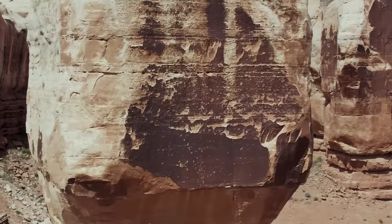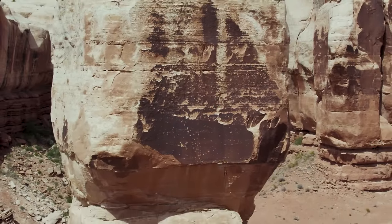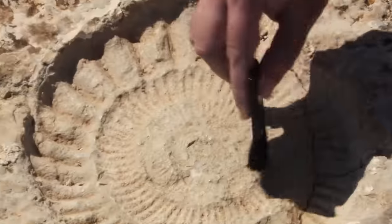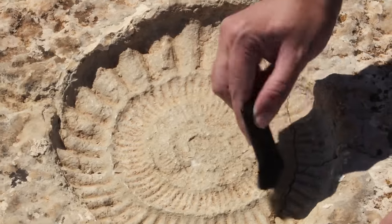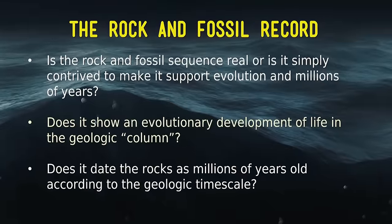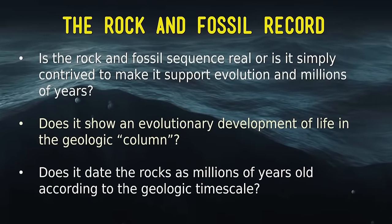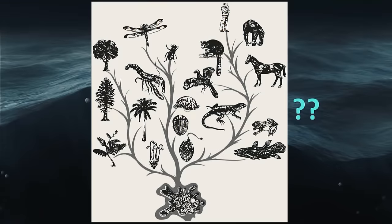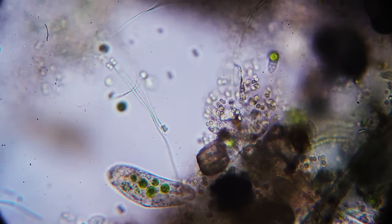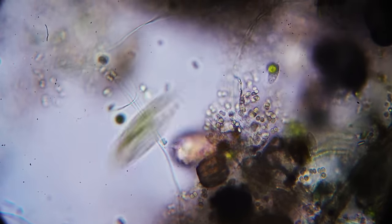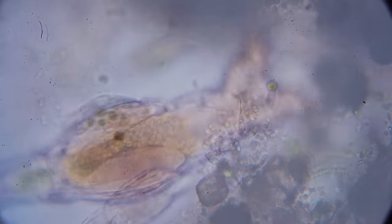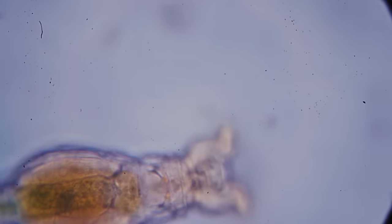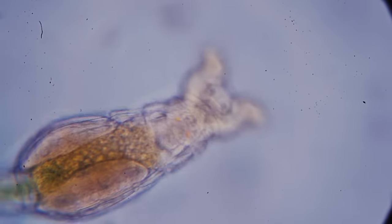Does the rock and fossil sequence represent reality? Is it simply contrived to support evolution and millions of years? Does it show the development of life through the so-called geologic column, and does it date the rocks as millions of years old? These diagrams in museums and textbooks suggest life developed from the first chemicals to the first cell, branching into all organisms we see today. I'm going to shock you.